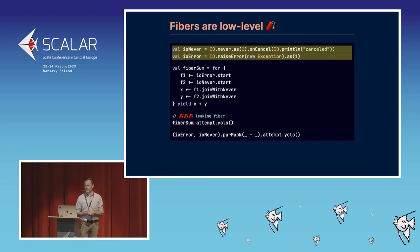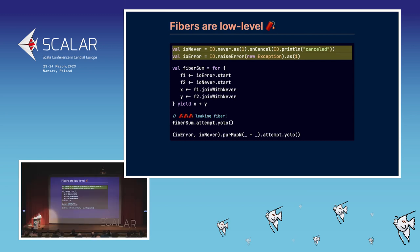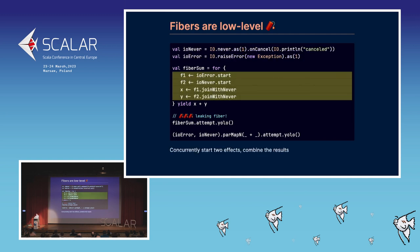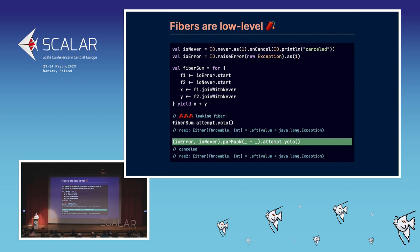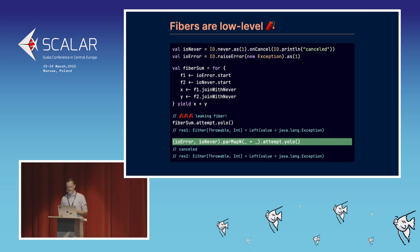Fibers are pretty low level. Here's an example: we have two IOs, one that never completes and one that throws an exception. If we use fiber start and join to run those concurrently, we have a problem — we do end up with a properly failed fiber, but the IO.never fiber is never cancelled. It's a leaking fiber. The proper way is to use high-level combinators like racePair, which will nicely run those in parallel and cancel the failed fibers.